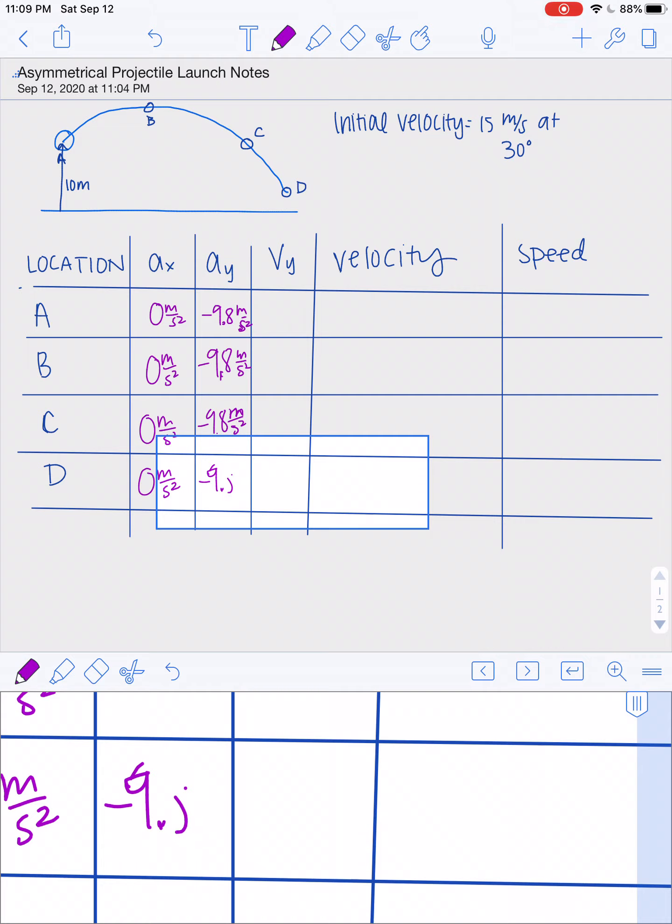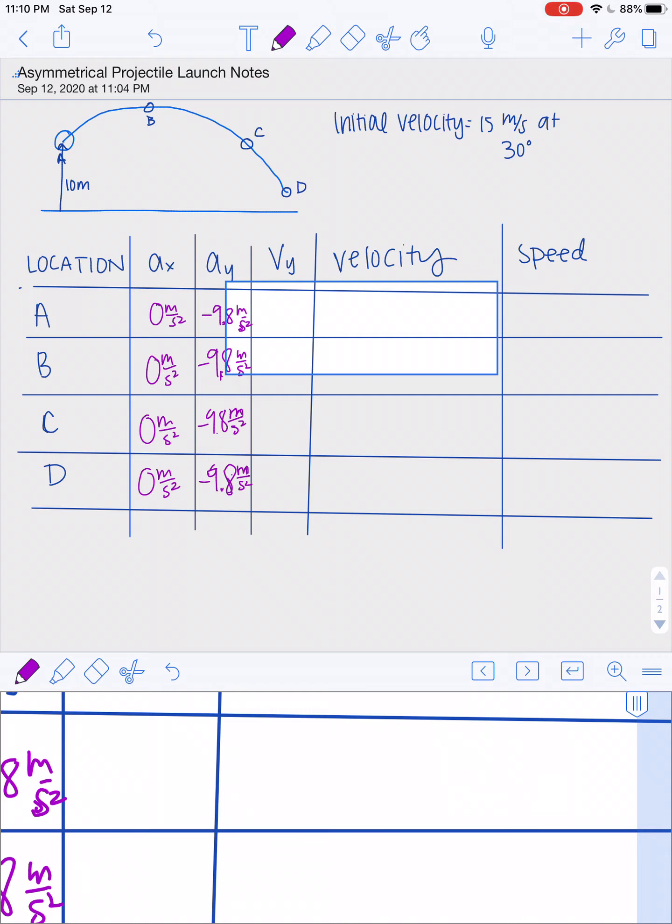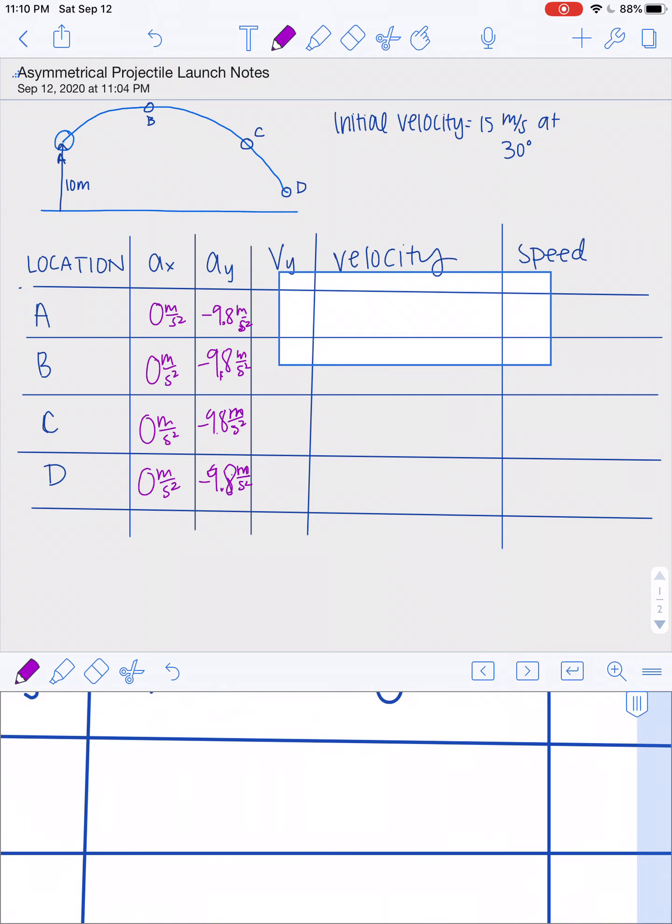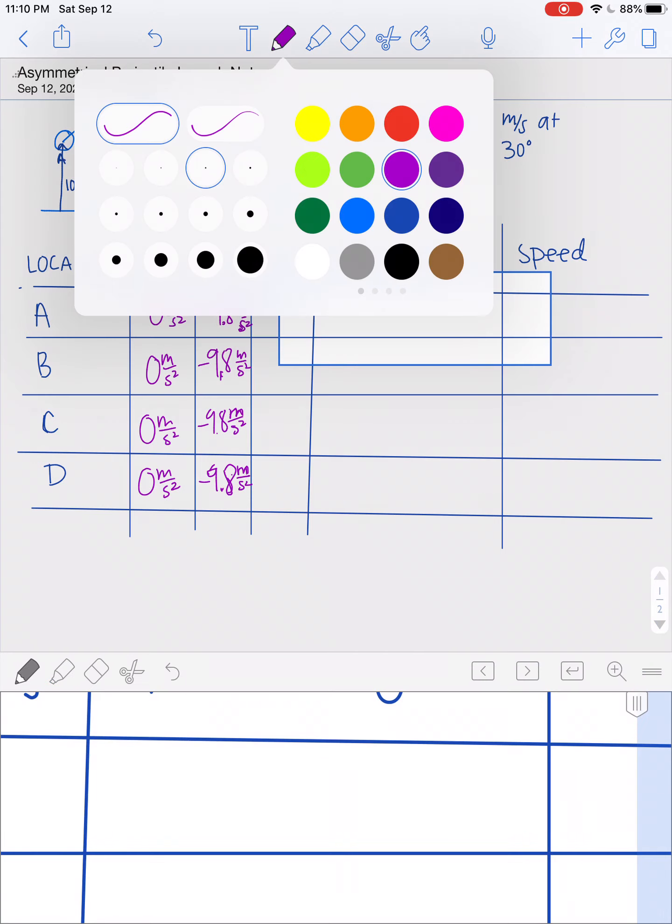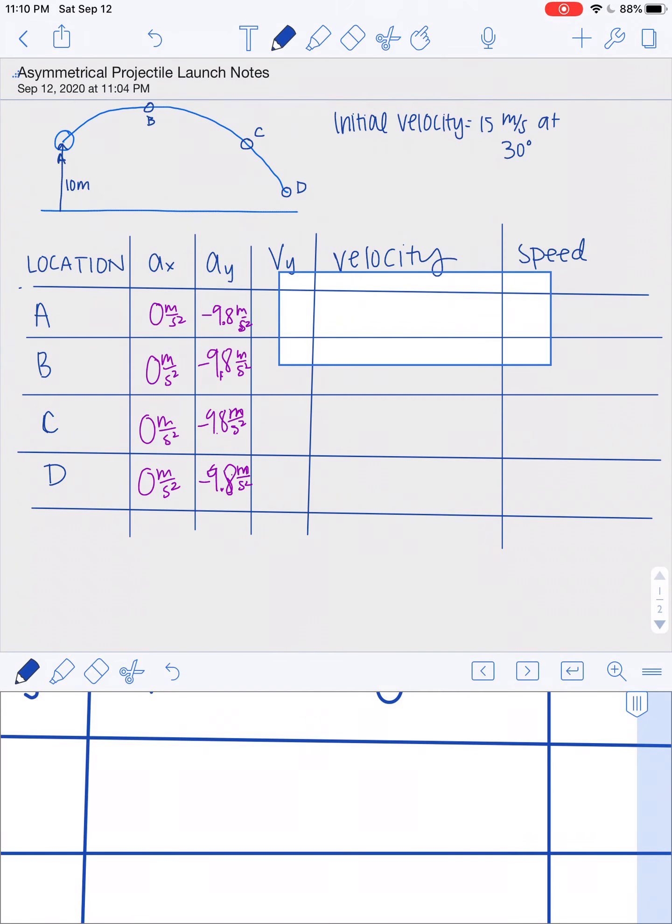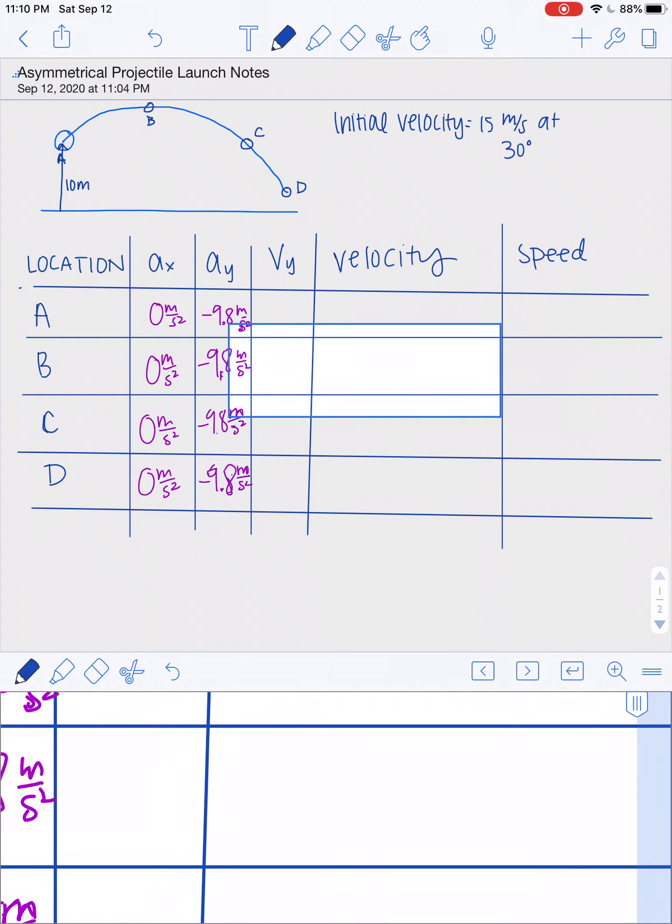Okay, and we do know one or a couple other pieces of information because they were either given to us or we can figure them out. The first one is we should know the velocity in the y direction at B. Zero.